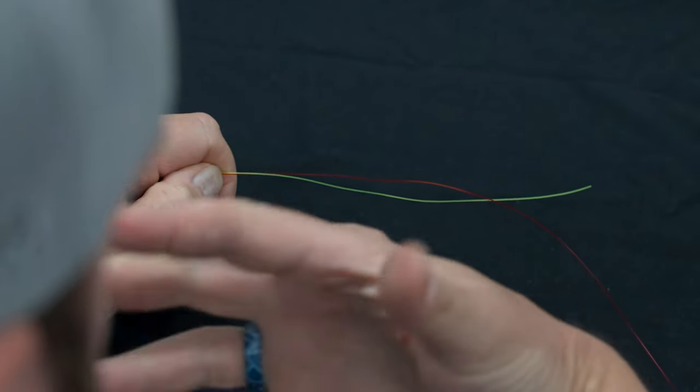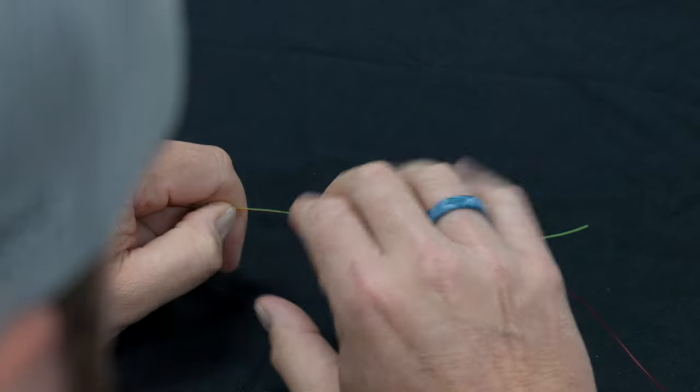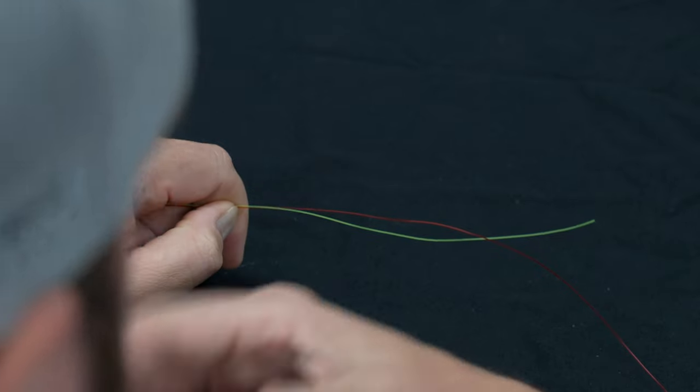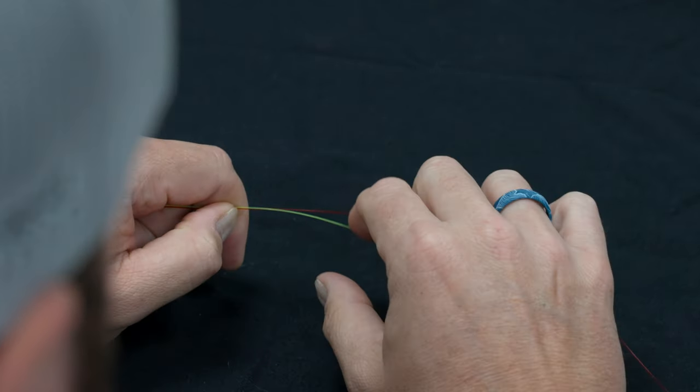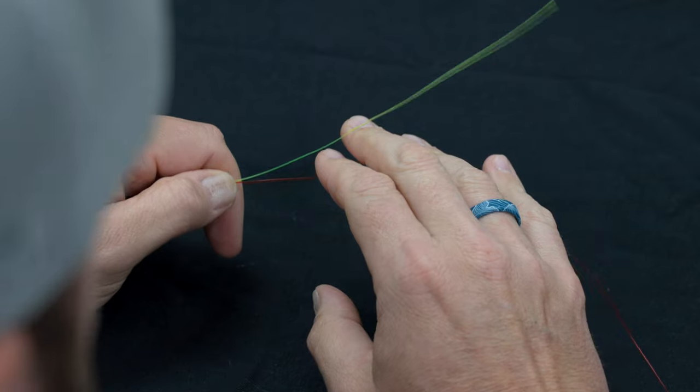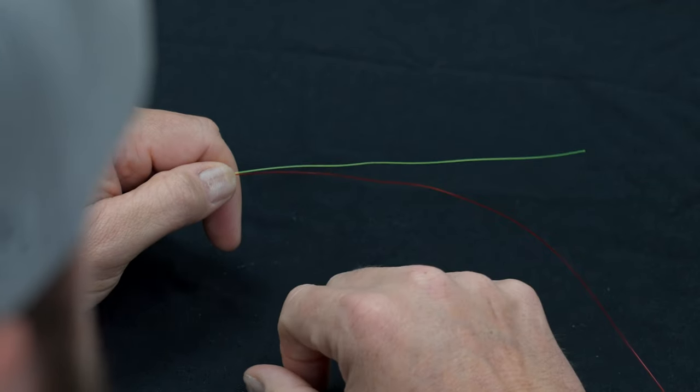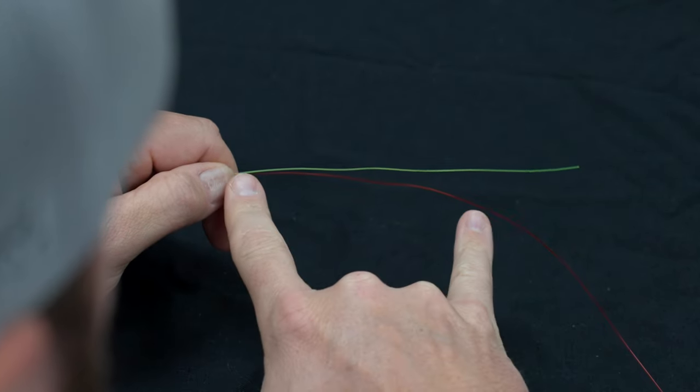Now there's plenty of ways to tie the blood knot. This is the way I tie it, so you can find probably five other ways to tie this, but this is what I've found to be the simplest way for me. So what you want to do is we're going to do five turns on each side of the knot.